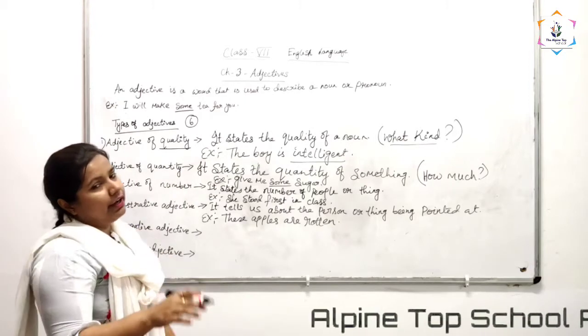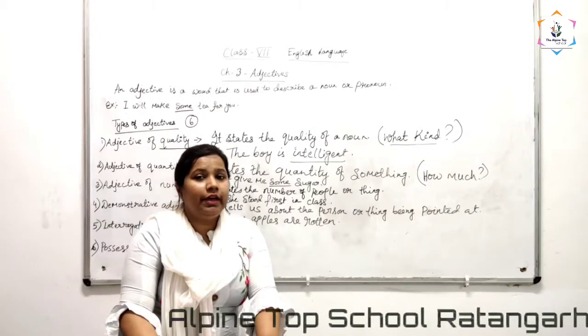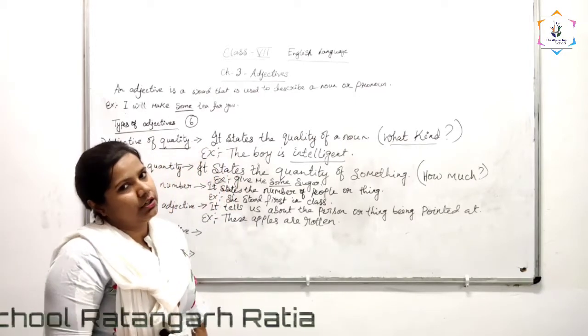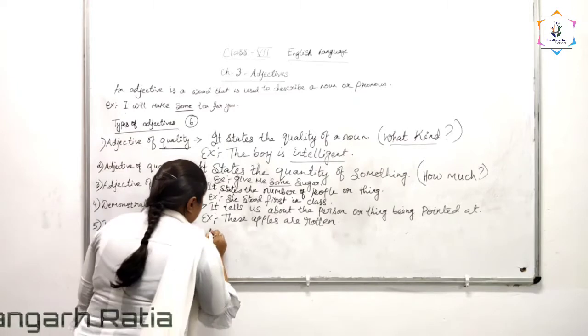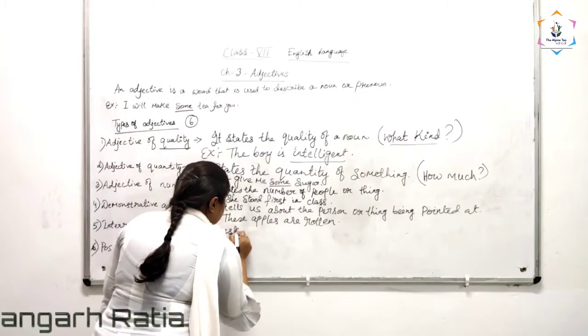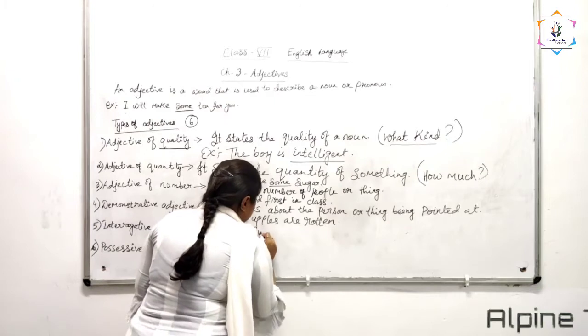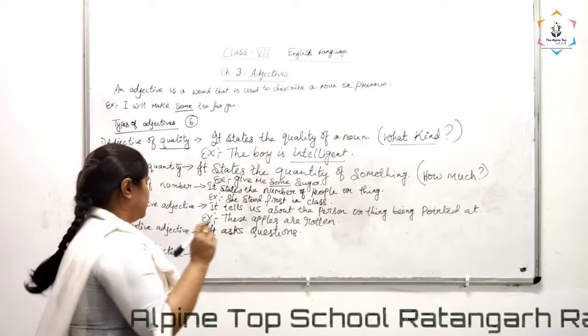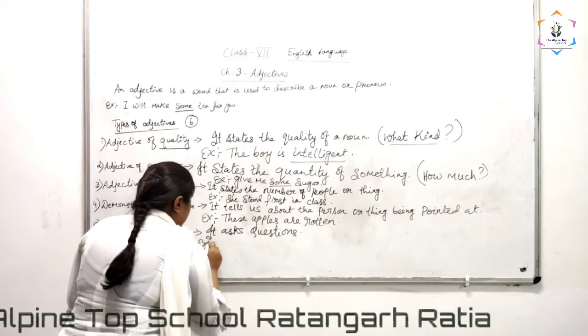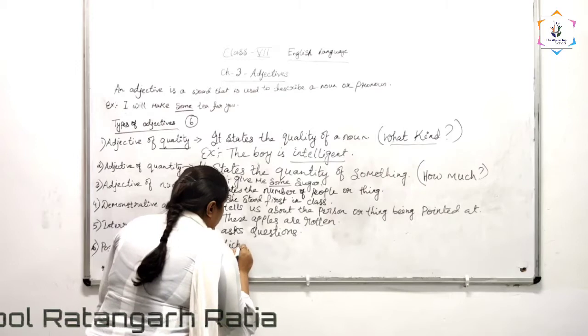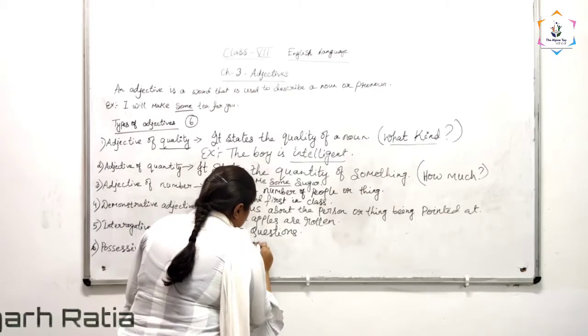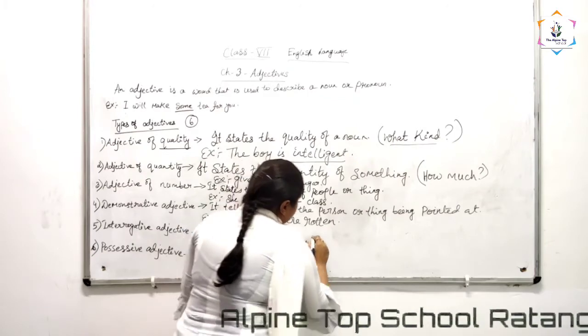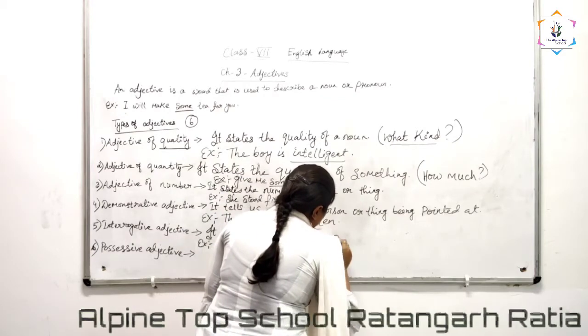Next you have interrogative. Interrogative, as you all know and we have done in our nouns also, always means asking questions. It asks questions. For example, which book will you buy? And it always ends with the question mark.